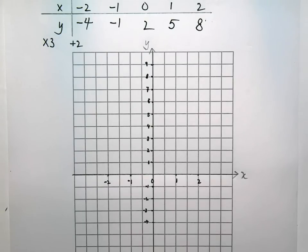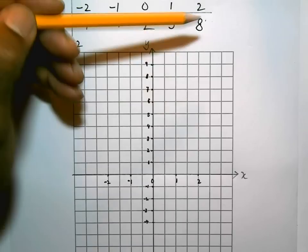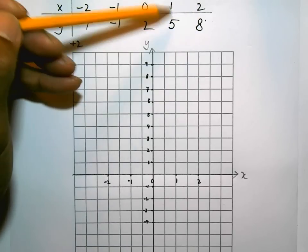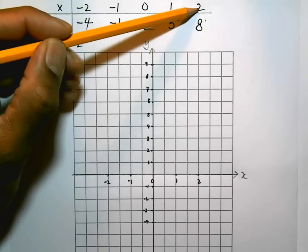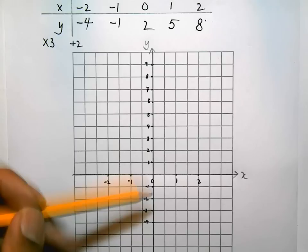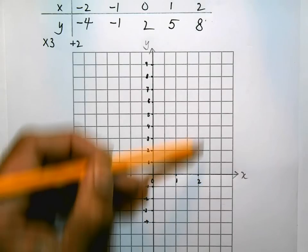The next thing I need to do is plot the points. I'm going to go for each set of these and plot. Remember, along the corridor, up the stairs. So x followed by y. 2, 8 is 2 along, 8 all the way to the top here. And I'm going to put a clear cross.